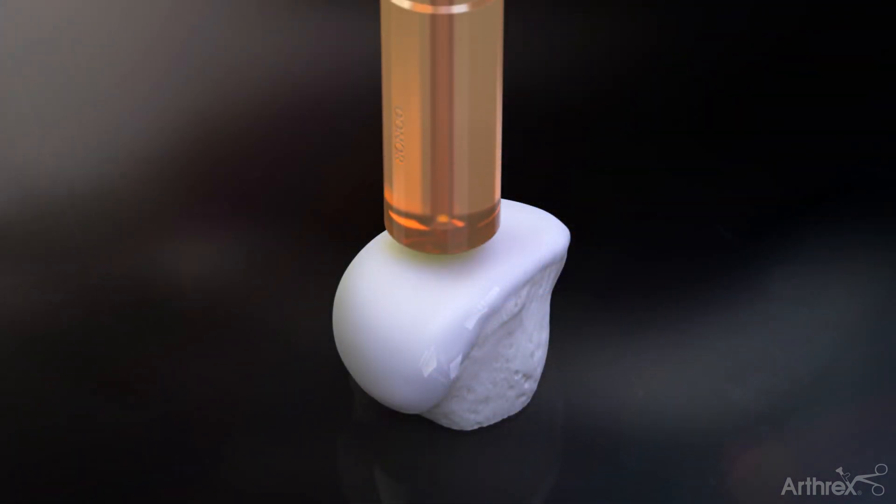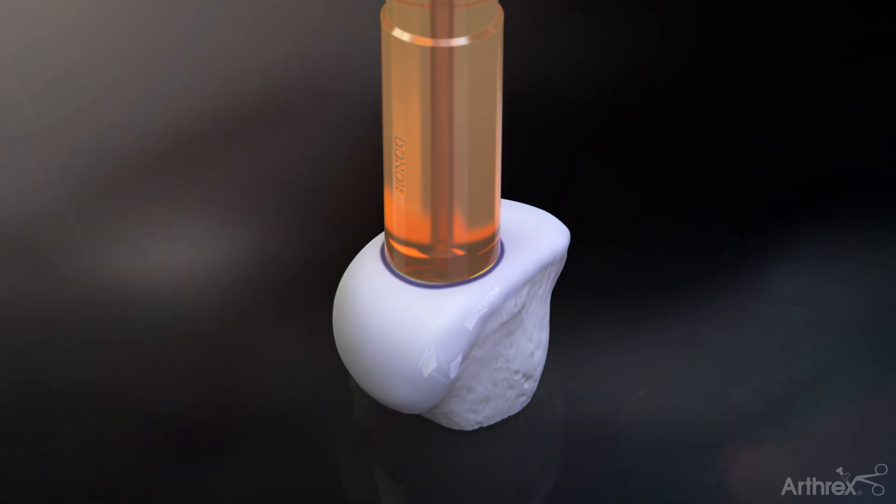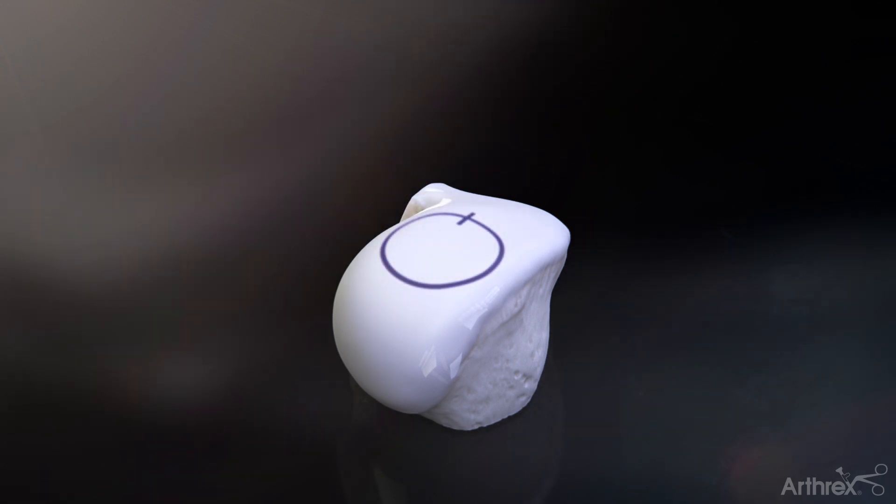Place the sizer used to establish the recipient defect size over the allograft condyle to ensure the allograft is large enough for the defect site. Then, mark it circumferentially and add a reference mark in a superior 12 o'clock position.